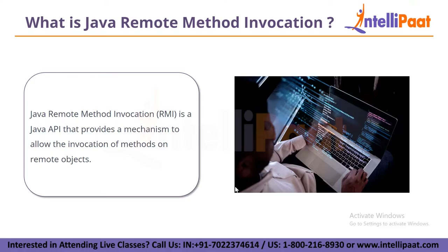The client and server communicate through a network using a protocol called JRMP, which is the Java Remote Method Protocol. RMI uses stubs and skeletons to provide communication between client and server. The client holds a stub object that represents the remote object, and the server holds a skeleton object that represents the local object. The stub object acts as a proxy for the remote object and the skeleton object acts as a proxy for the local object.